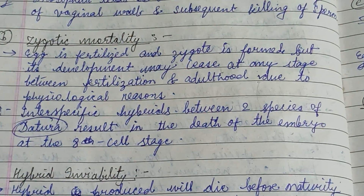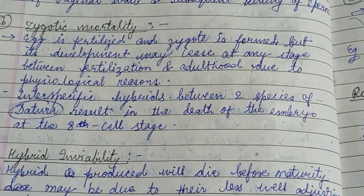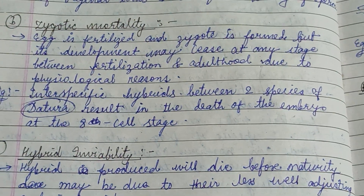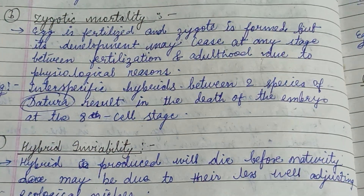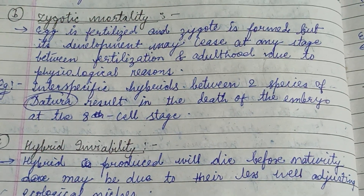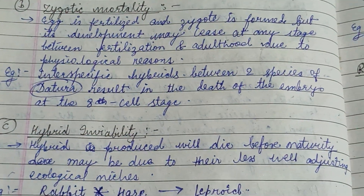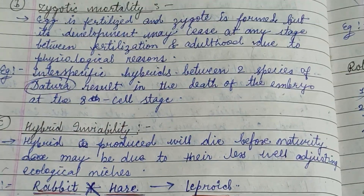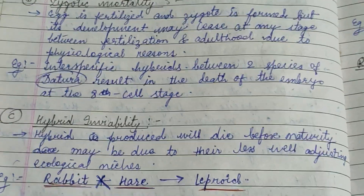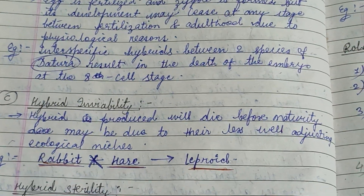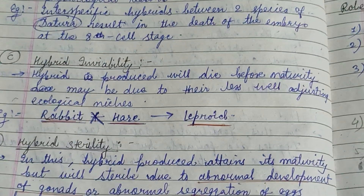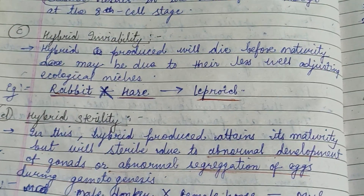Zygotic mortality includes the formation of the zygote, but it cannot survive and dies before fetus formation. For example, interspecific hybrids between two subspecies of certain organisms result in the death of the embryo at the cell stage.